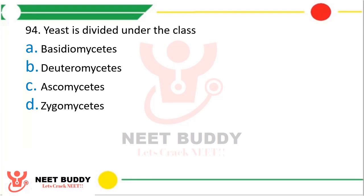Question number 94: Yeast is classified under the class — the correct answer is option C, Ascomycetes.